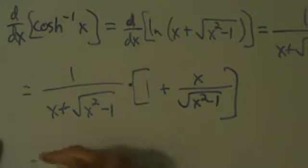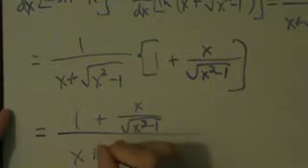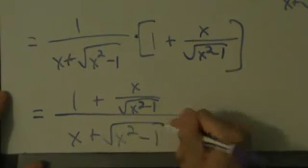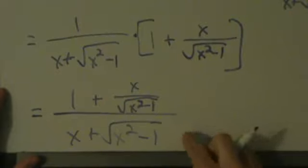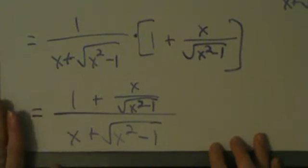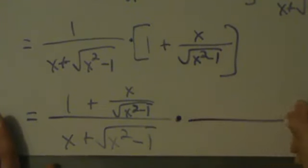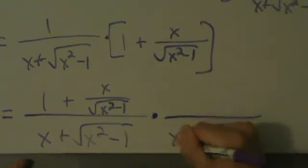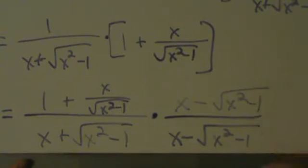We're going to write this as 1 plus x over root x squared minus 1, all divided by x plus root x squared minus 1. We now have a complex fraction — a fraction inside another fraction. Rather than getting a common denominator on top, which makes things more difficult later, we should multiply the top and the bottom by the conjugate of the bottom, which is x minus root x squared minus 1. That's the only difference from the last video — minus 1 instead of plus 1.